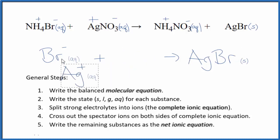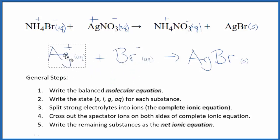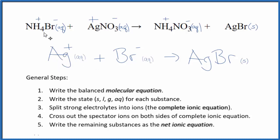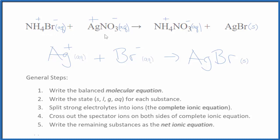Sometimes you'll see the positive ion written first — it doesn't really matter, it's the same equation, maybe it looks a little nicer. Either way, this is Dr. B with the balanced net ionic equation for NH4Br plus AgNO3. Thanks for watching.